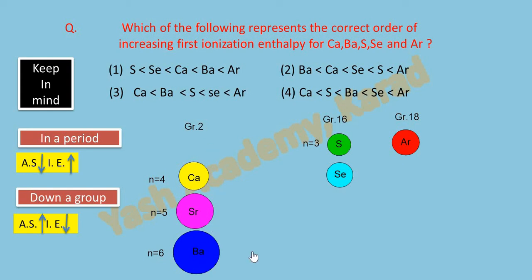Down a group, the atomic size goes on increasing. Group 16 has two elements: sulfur and selenium, so atomic size also goes on increasing. And argon is group 18 element. It has a slightly larger atomic size as compared to group 17 elements.